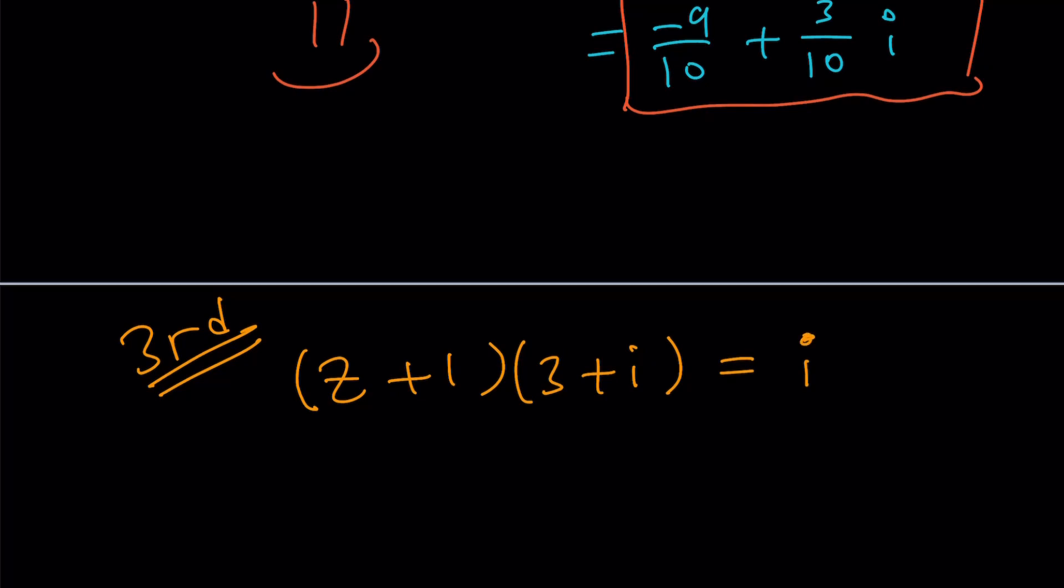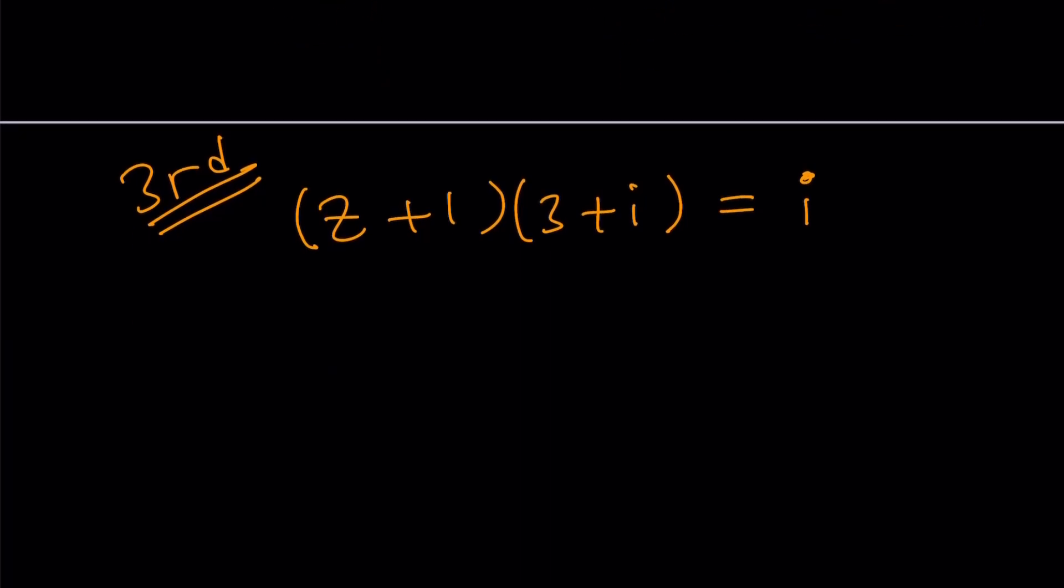Now, think about this. I mean, I distributed the Z and I had to factor it again. So why not just keep it as is, not distribute it. And let's just divide both sides by 3 plus I. You're going to notice that it's actually a better approach, in my opinion. I could be wrong. That's personal opinion. So now we got this. So what am I going to do to solve for Z?